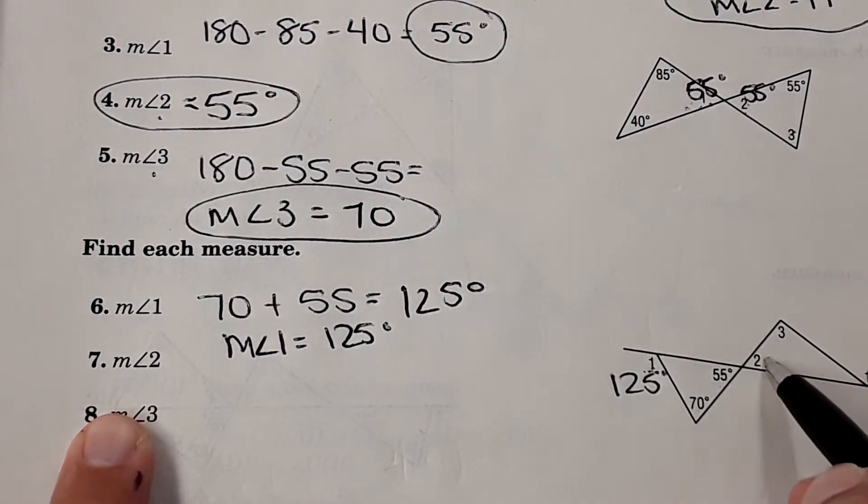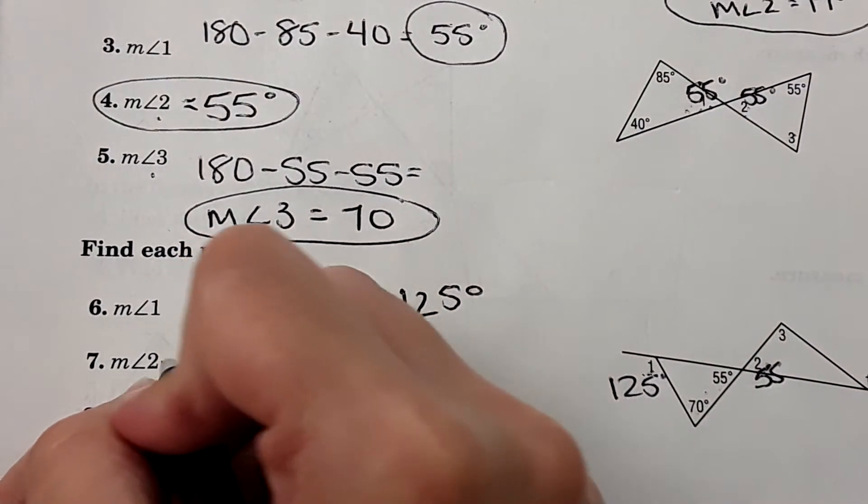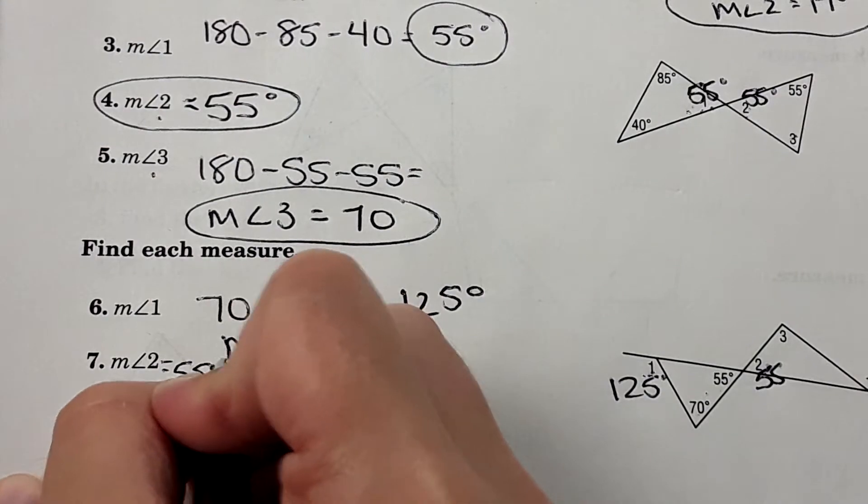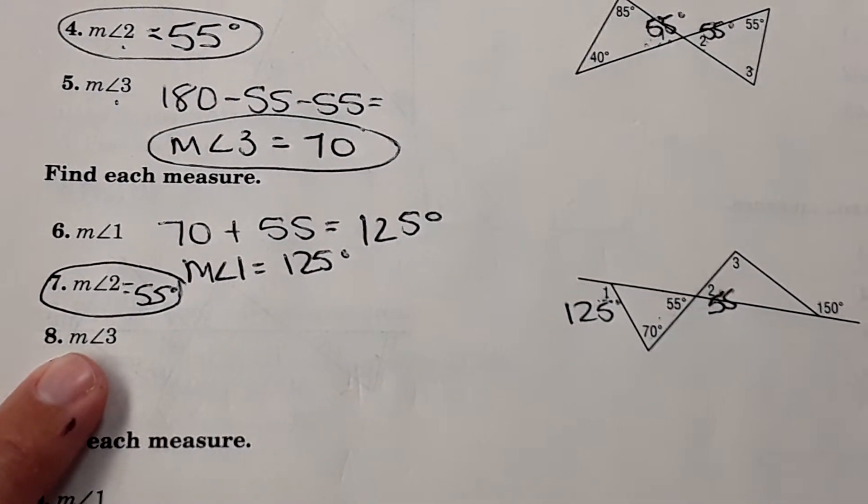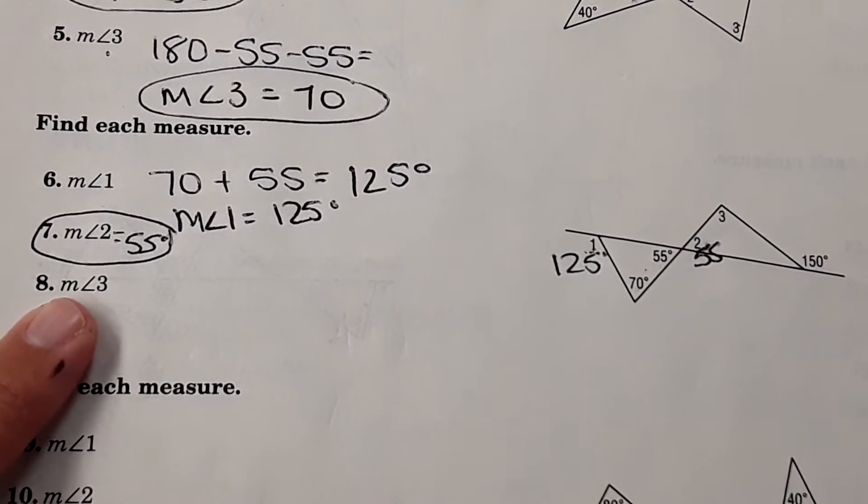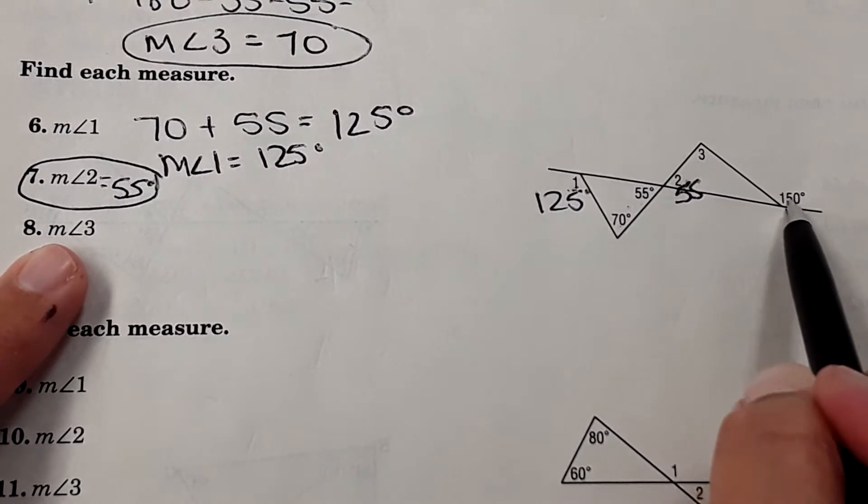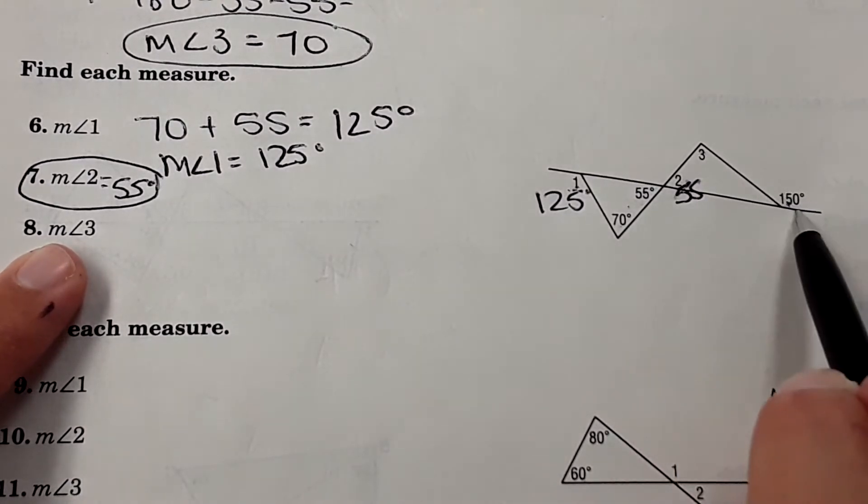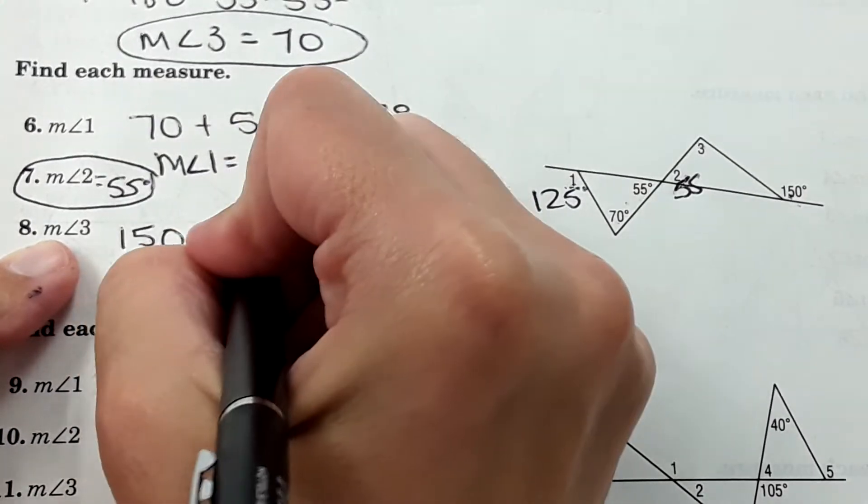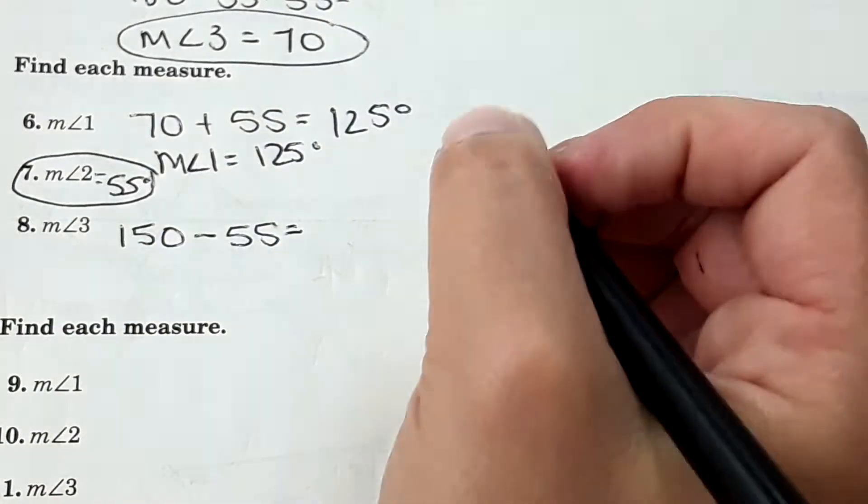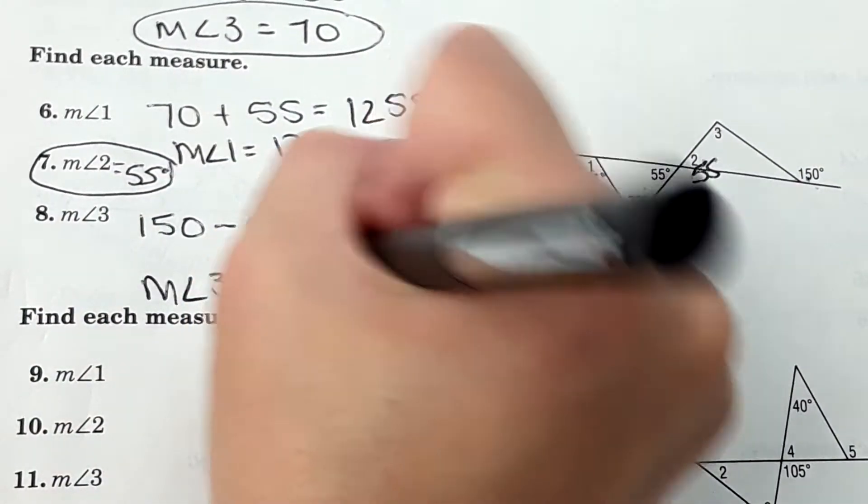Then for measure of angle two, is a vertical angle again, so it's the same measure, 55 degrees. Measure of angle three, so we're still using the exterior angle theorem. So these two angles have to add to 150, so we can do 150 minus 55 equals 95 degrees. So measure of angle three equals 95 degrees.